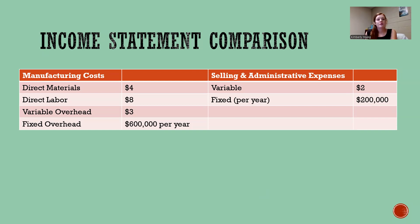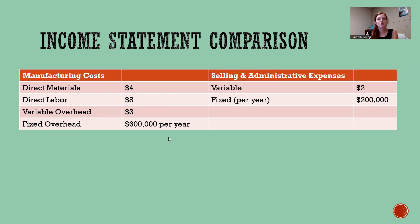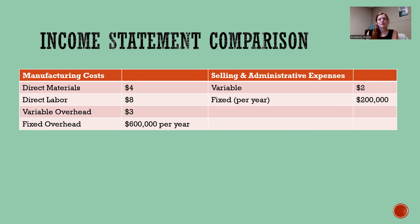Now we're going to compare the two methods on the income statement. We'll go through three years and compare them over a long period of time. We already know the manufacturing details: $4 direct materials, $8 direct labor, $3 variable overhead per unit, and $600,000 per year fixed overhead. We also have variable selling and administrative expenses of $2 per unit and fixed selling and administrative of $200,000 per year — things like office rent, supplies, and office salaries.